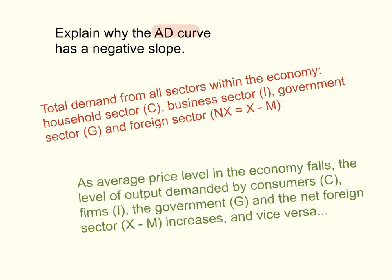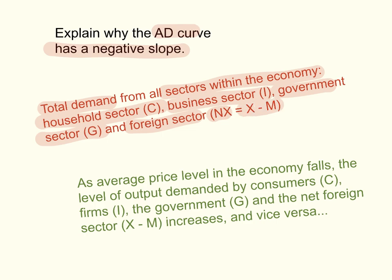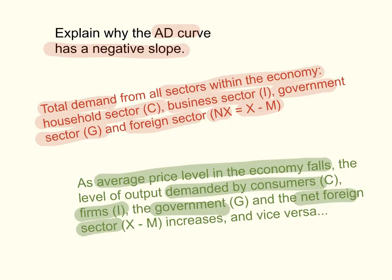We now have to explain why the Aggregate Demand curve has a negative slope. It is the total demand from all sectors within the economy: the household sector, whose demand is called consumption spending (C); the business sector, whose demand is investment spending (I); the government sector, whose demand is government spending (G); and the foreign sector, which gives us net exports — the difference between export revenue and import spending. As the average price level falls, the level of output demanded by consumers, firms, the government, and the net foreign sector increases.